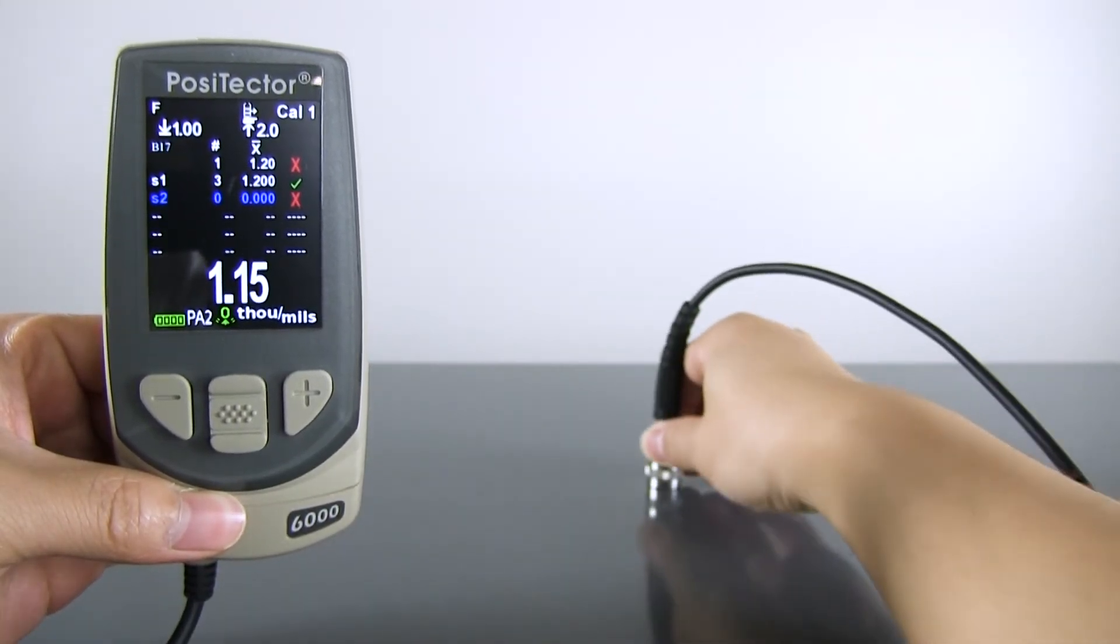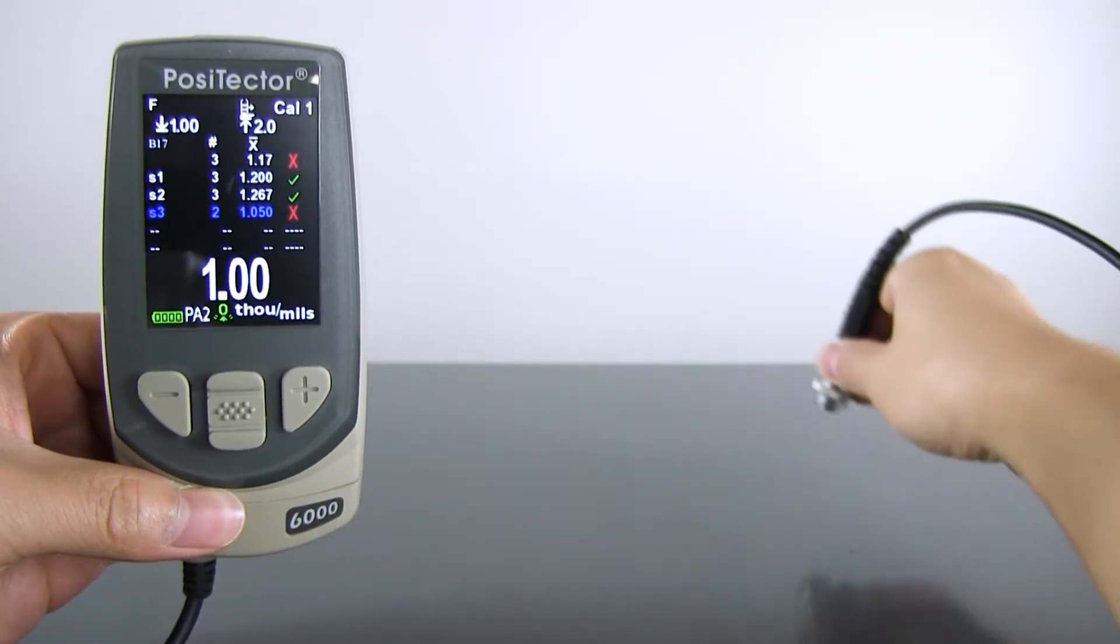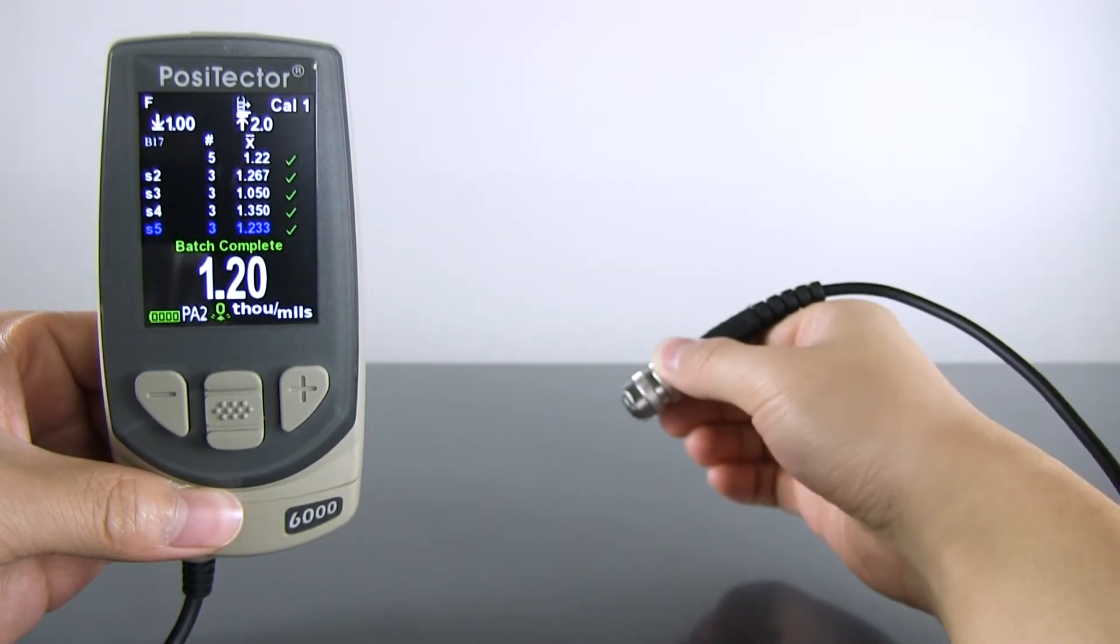For example, when PA2 mode and scan mode are enabled at the same time, the gauge automatically scans a set number of readings for each spot, proceeding to the next spot when the probe is lifted.